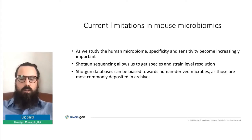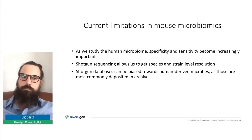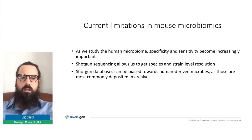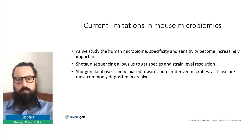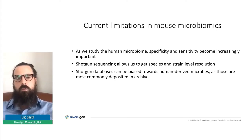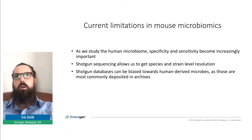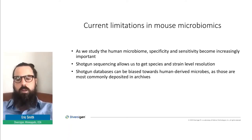However, we're currently slightly limited in studying the mouse microbiome. As we study the human microbiome, it's very important that we are specific and sensitive to changes in the microbiome and how those might be impacting the phenotypes we're seeing. The best way to get this specificity and sensitivity is by shotgun whole genome metagenomic sequencing. The issue right now is that shotgun databases are largely biased towards human-derived microbes — human pathogens, human commensals — because those are where people put their resources in terms of sequencing microbes and depositing genomes into public repositories.